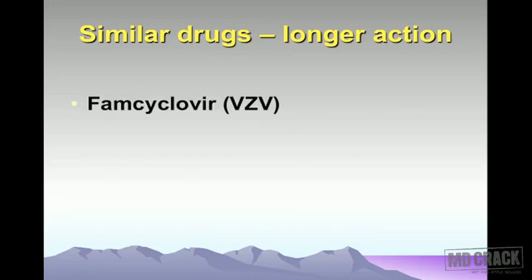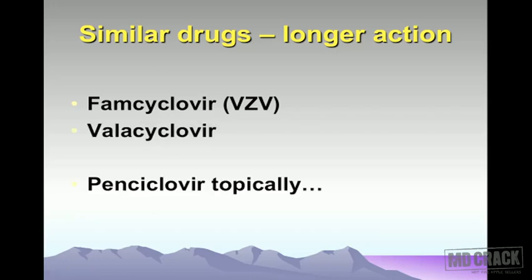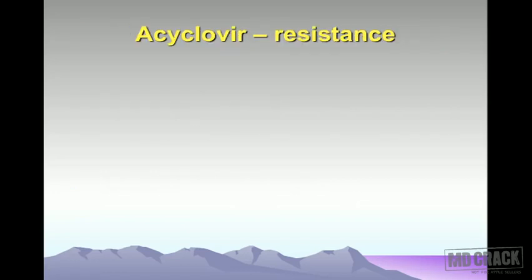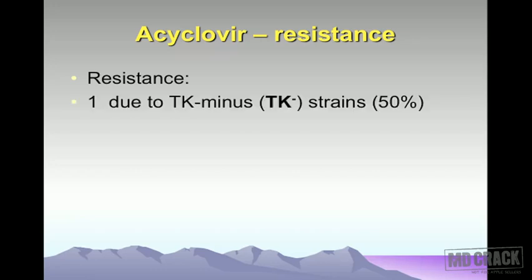Similar drugs in the acyclovir group with longer duration of action include famciclovir (used for VZV), valacyclovir, and penciclovir (used by topical route). Regarding resistance to acyclovir: one mechanism, occurring in 50% of organisms, is resistance due to TK-minus strains. TK stands for thymidine kinase — if the virus lacks thymidine kinase, the drug cannot get activated.